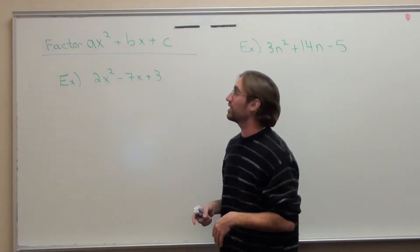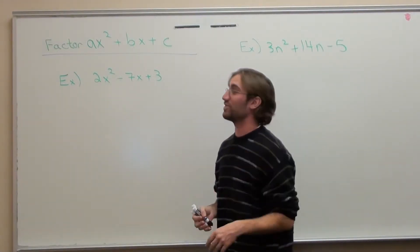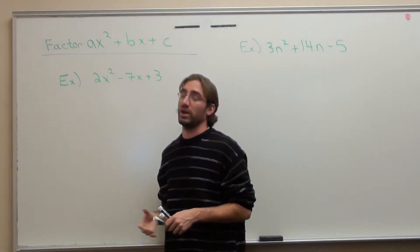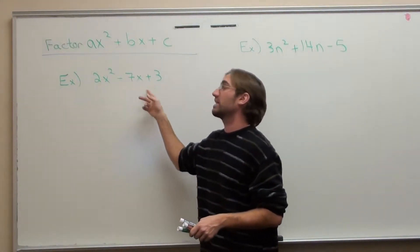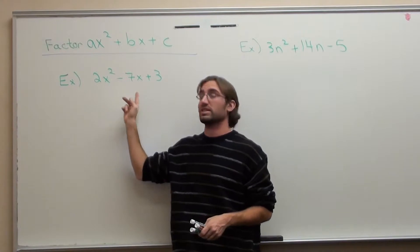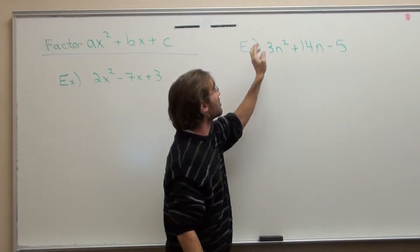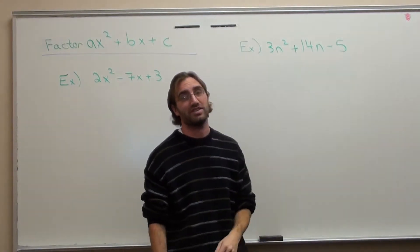Hello again. We are factoring trinomials, but we're doing something different. And by different I mean that we're going to put a number in front of the x squared. So instead of just x² - 7x + 3, it's 2x² - 7x + 3. Instead of n² + 14n - 5, it's 3n² + 14n - 5.